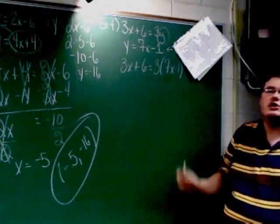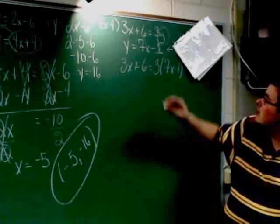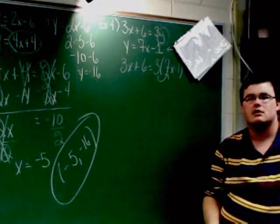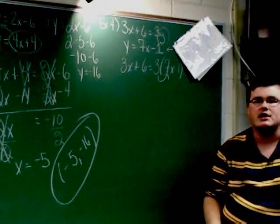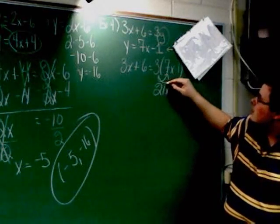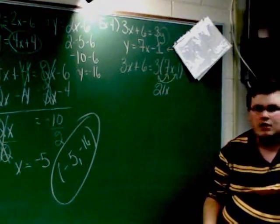Okay, this here is distributive property. So I've got to distribute the 3 through. So I've got to do 3 times 7x. Well, 3 times 7 is going to give me 21, 21x. And I've also got to do 3 times 1. 3 times 1 is going to give me 3.